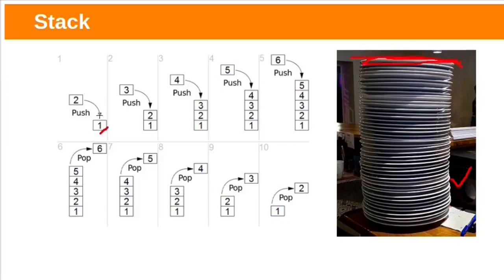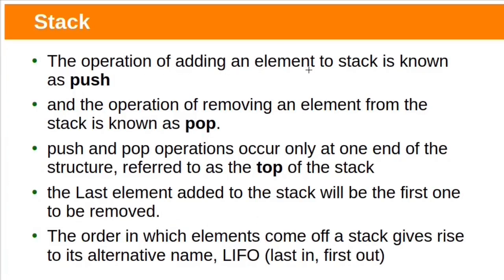Elements can be added on top one by one — two, three, four, five, and six. Only the top element can be removed first. So we remove six first, then five, four, three, two respectively. The operation of adding an element to stack is known as push, and the operation of removing an element from the stack is known as pop. Push and pop operations occur only at one end, referred to as top. Last element added to the stack will be the first one removed — this is a last-in, first-out data structure.